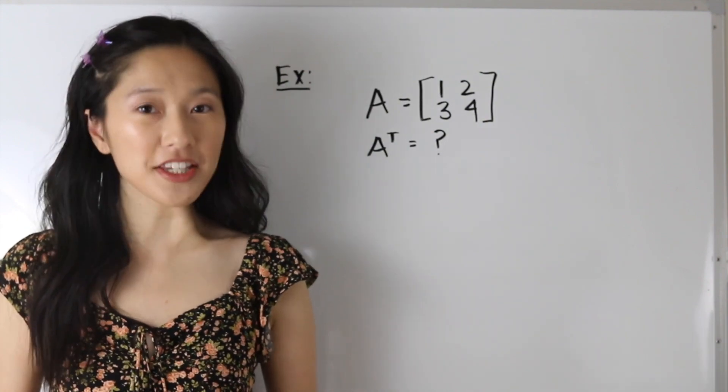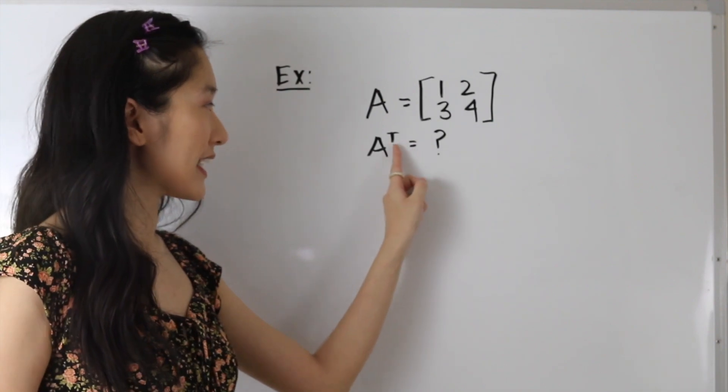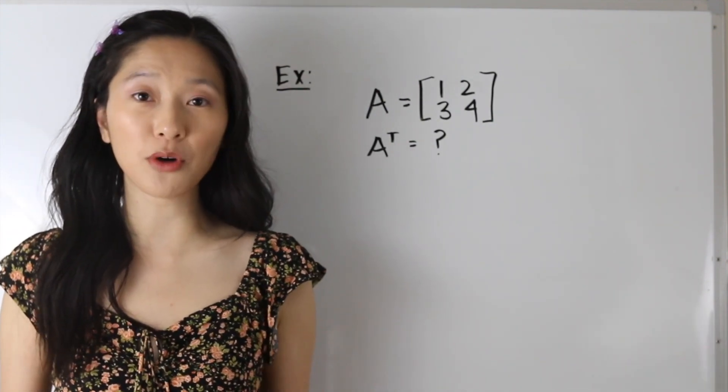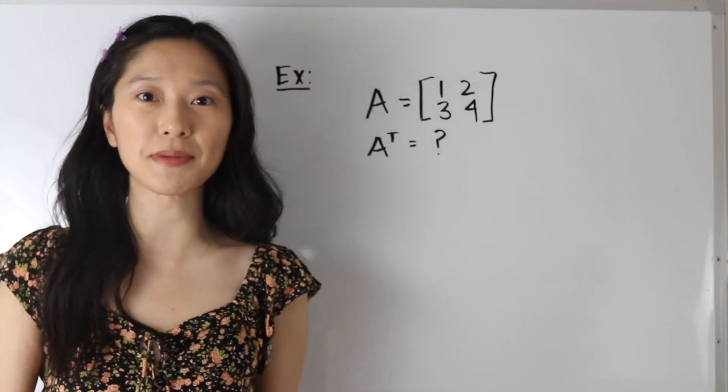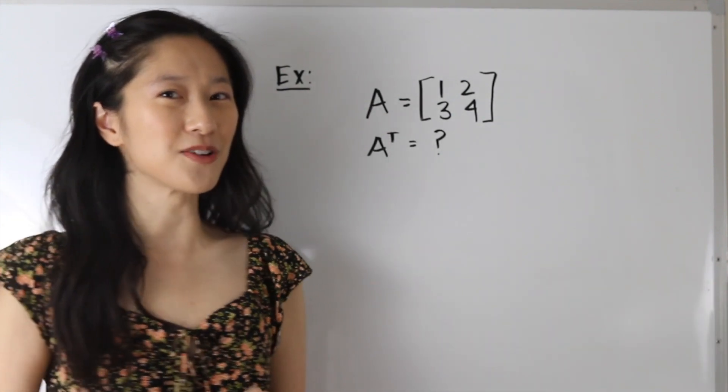So the first thing to note is that the transpose of a matrix is denoted by the superscript of the letter T, and the second thing is that when you find the transpose of a matrix, the rows become the columns and the columns become the rows. So if that sounds a little bit confusing, let me show you guys how to do that.